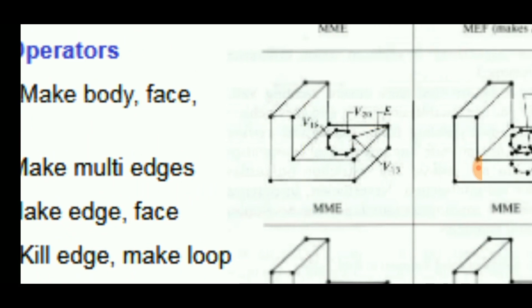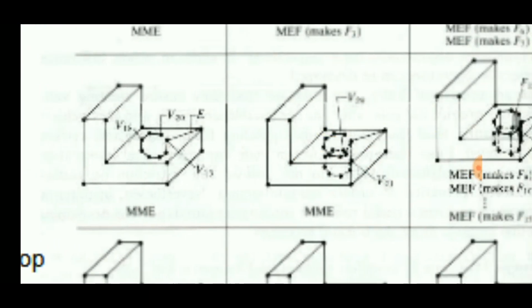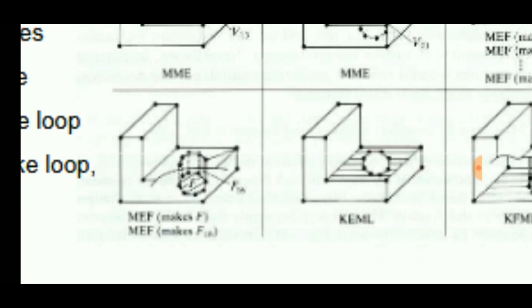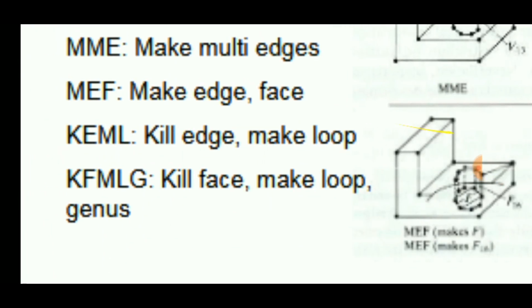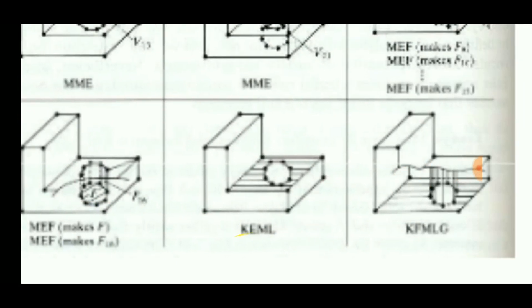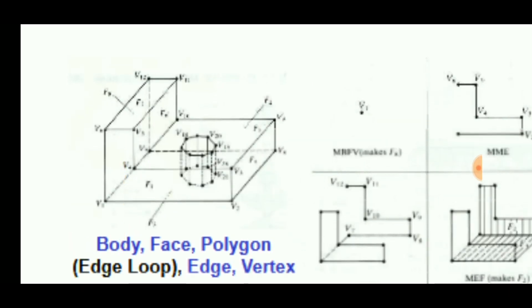The hole is made of edges only, so with make multiple edges we can create a hole. Then similar process and finally extruding, then MEF make edge face, and finally the complete product can be made in this manner. These are some of the Euler operations.